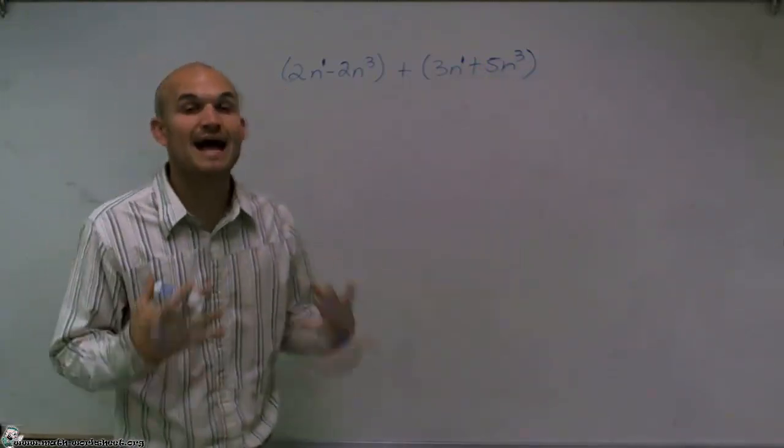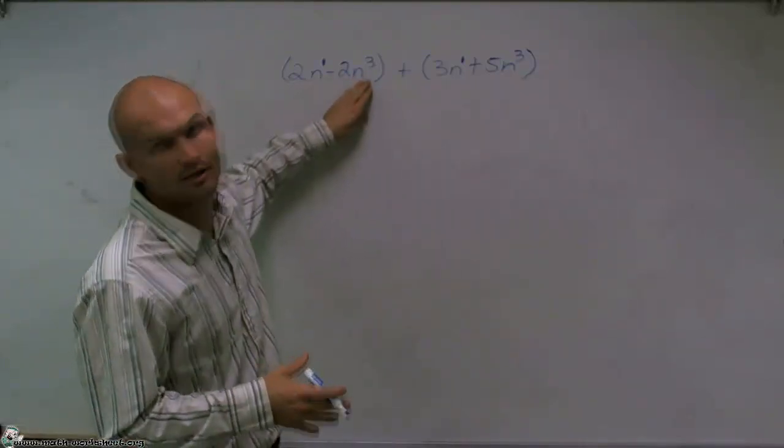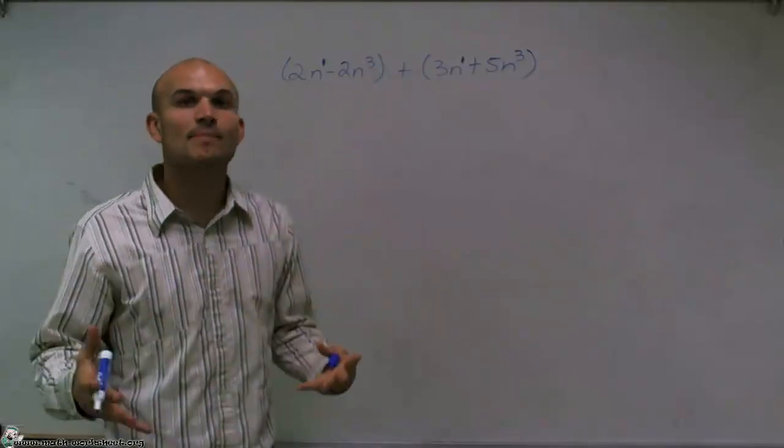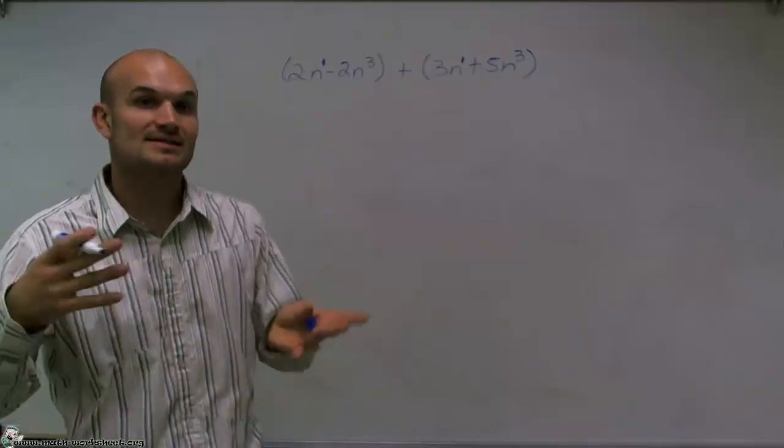So it's really important when looking at polynomials to look at what the base is, your variable, and then look at the exponent. Because we can only combine, add or subtract, when they have exactly the same base and exponent.